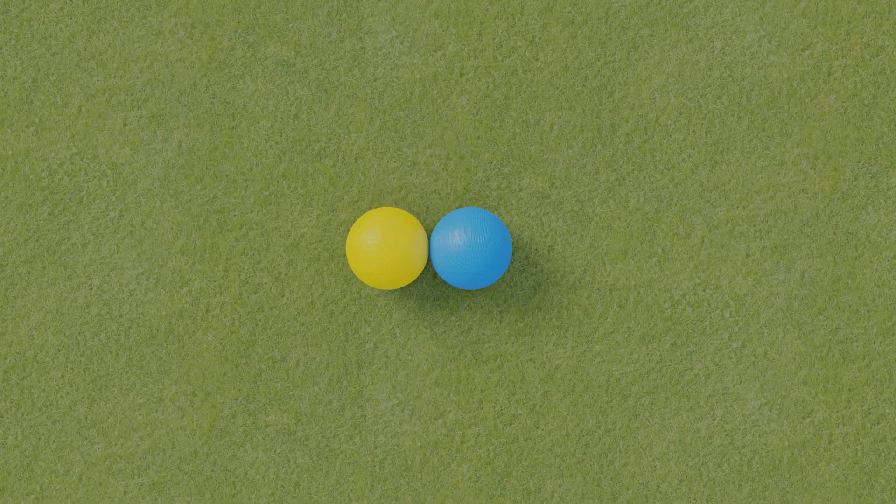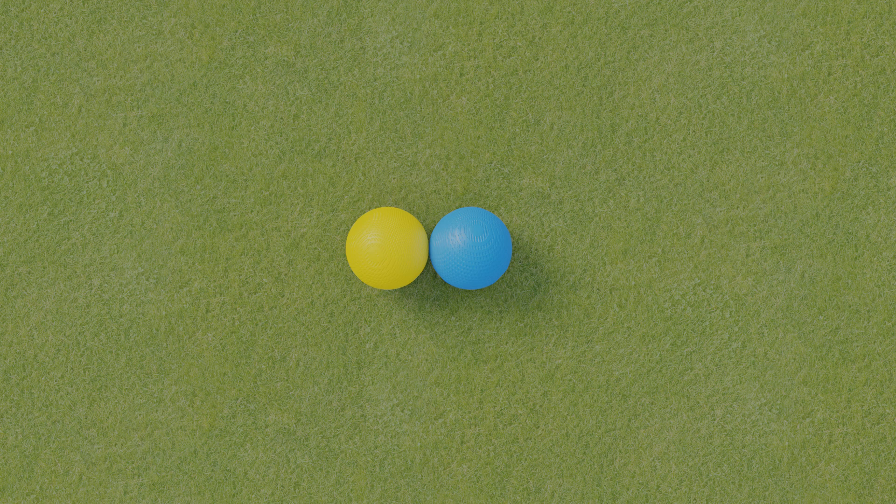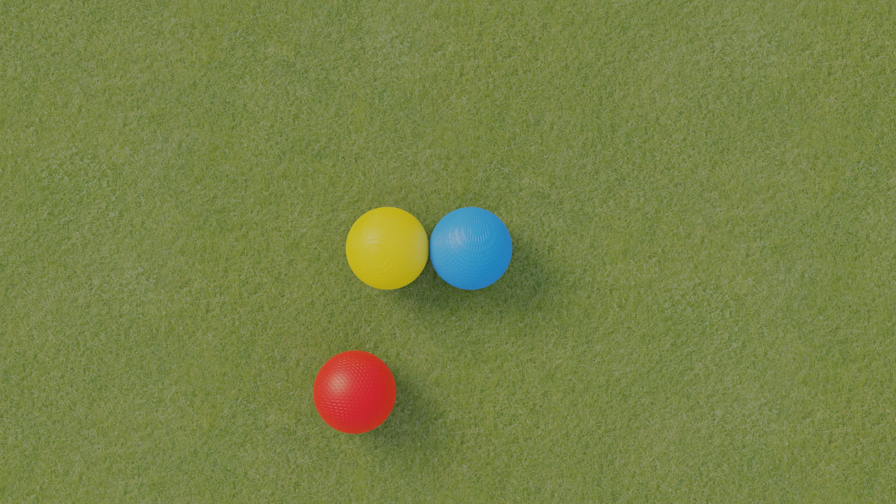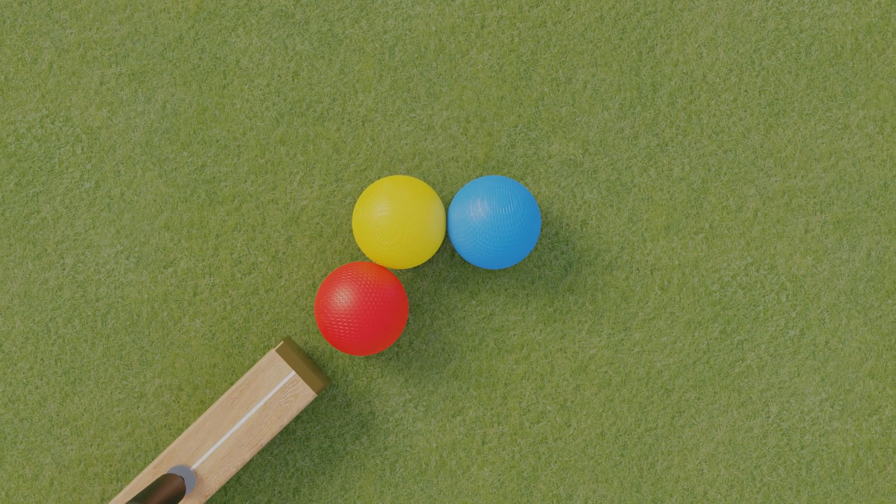The roqueted ball must then be placed next to and touching the live ball. When the yellow ball is now croqueted, there is no reason why the blue ball can't be roqueted simultaneously.